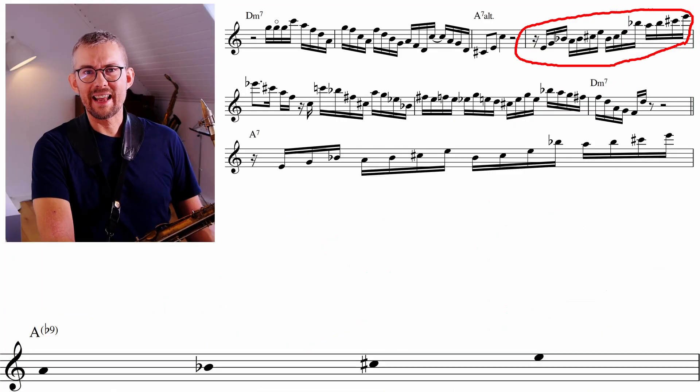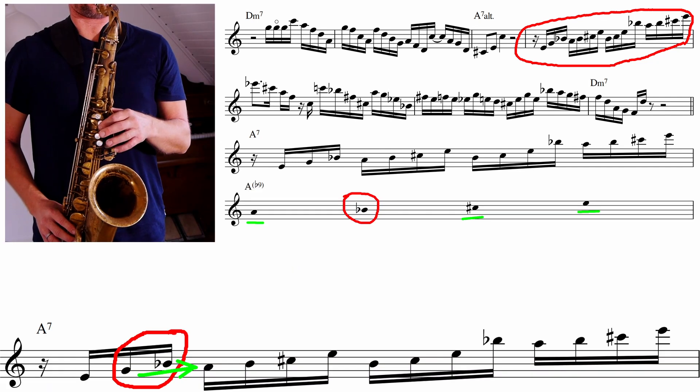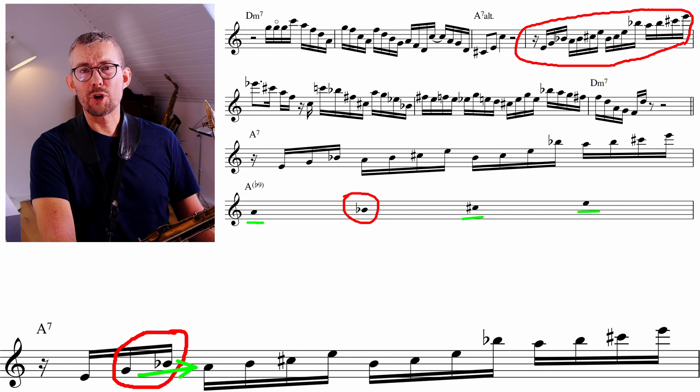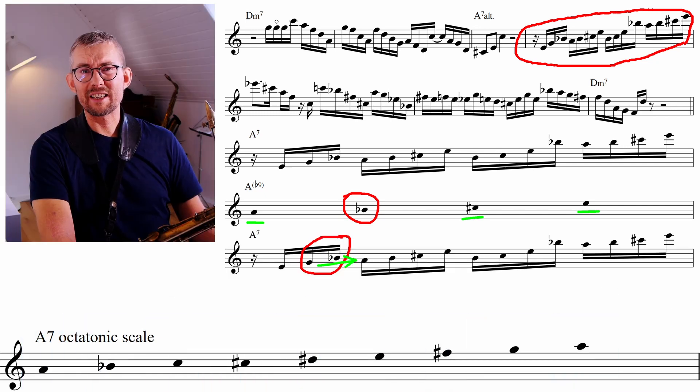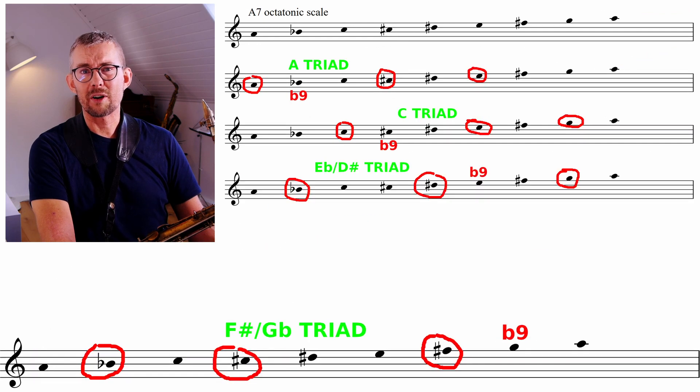This super lick is an A triad added a b9. The b9 gives a great outside sound in this lick. The first part is an encircling of the A, and the triad formation is a part of the octatonic scale. Michael Brecker is using one of the 4 major triads in the octatonic scale.